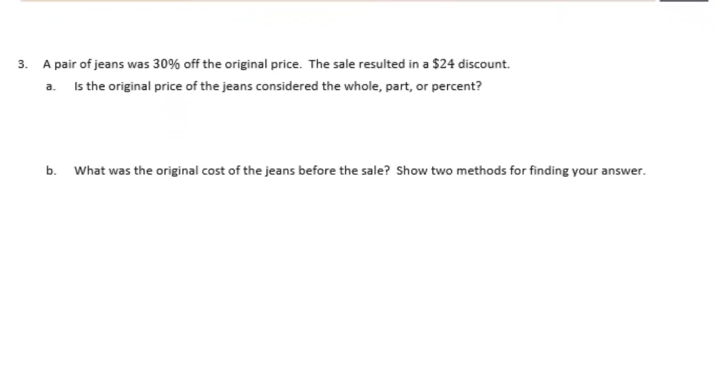Number 3. A pair of jeans was 30% off the original price. The sale resulted in a $24 discount. Is the original price of the jeans considered the whole, part, or percent? So the original price would be considered the whole. Because that's how much the whole price is. That's how much it costs before you take any discounts or percentages off.